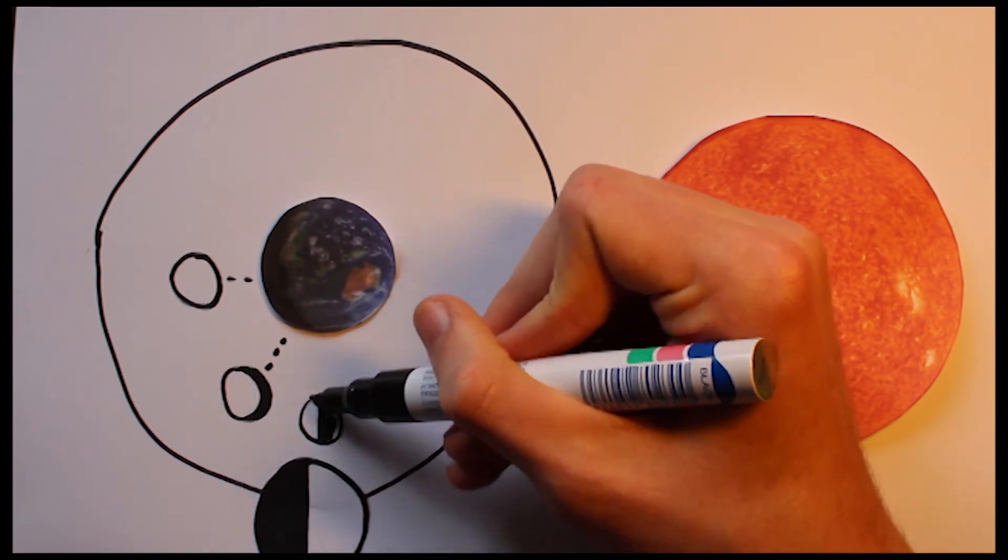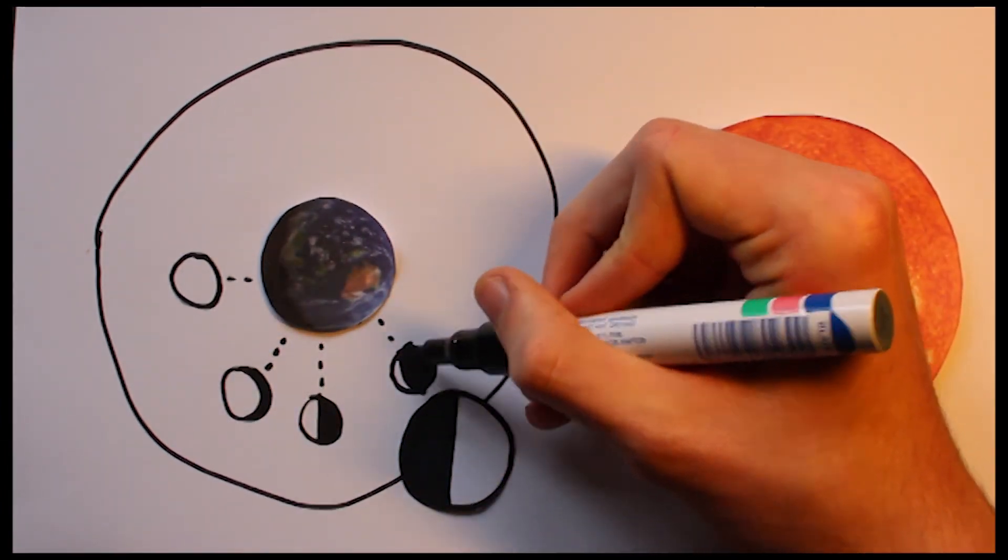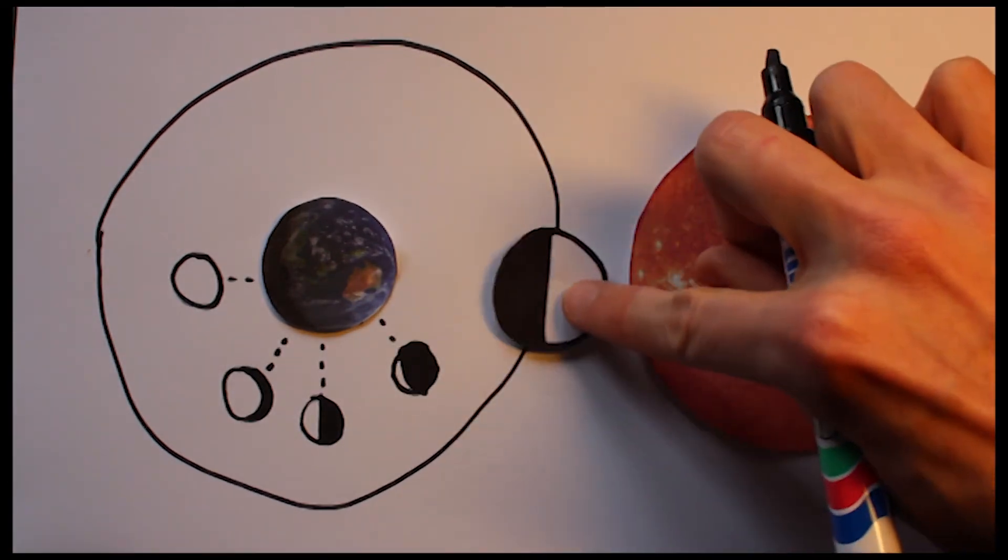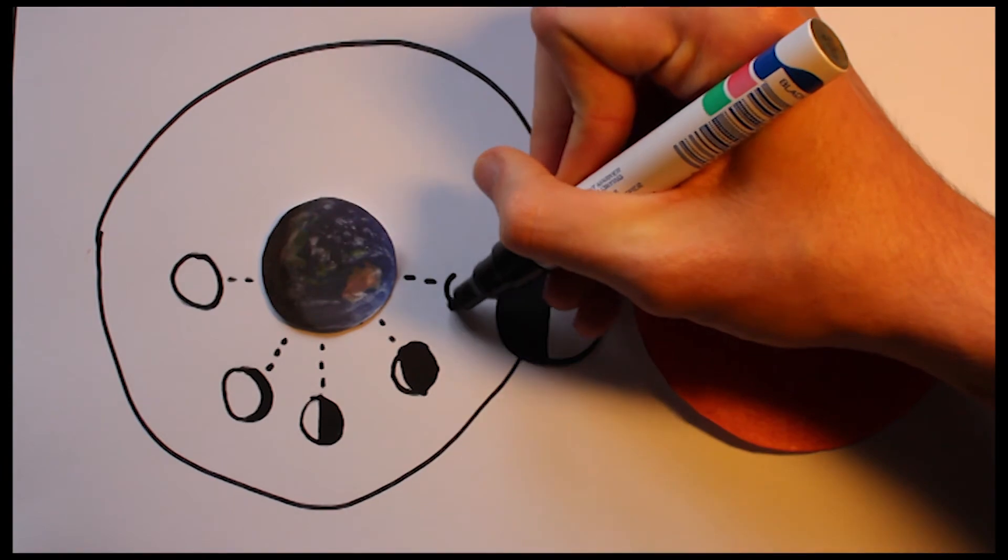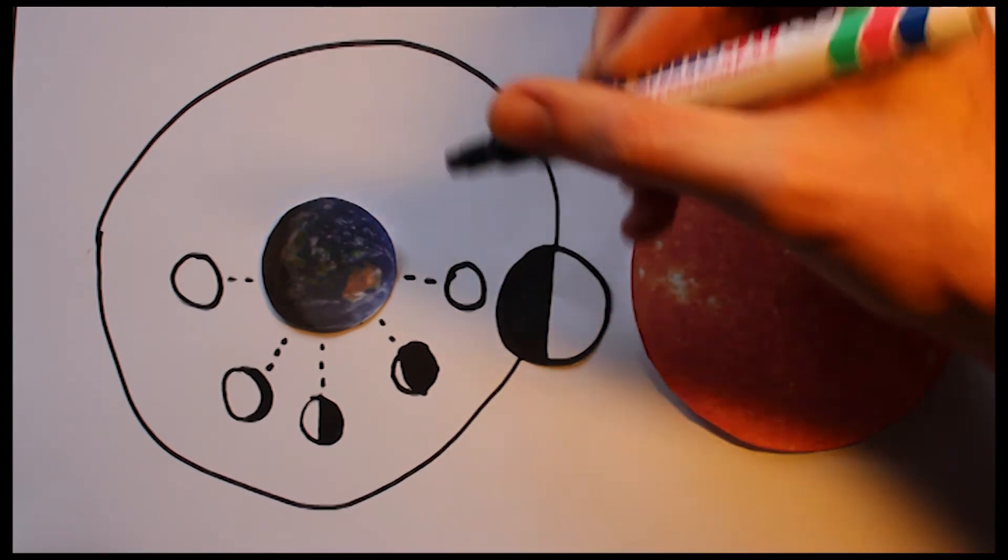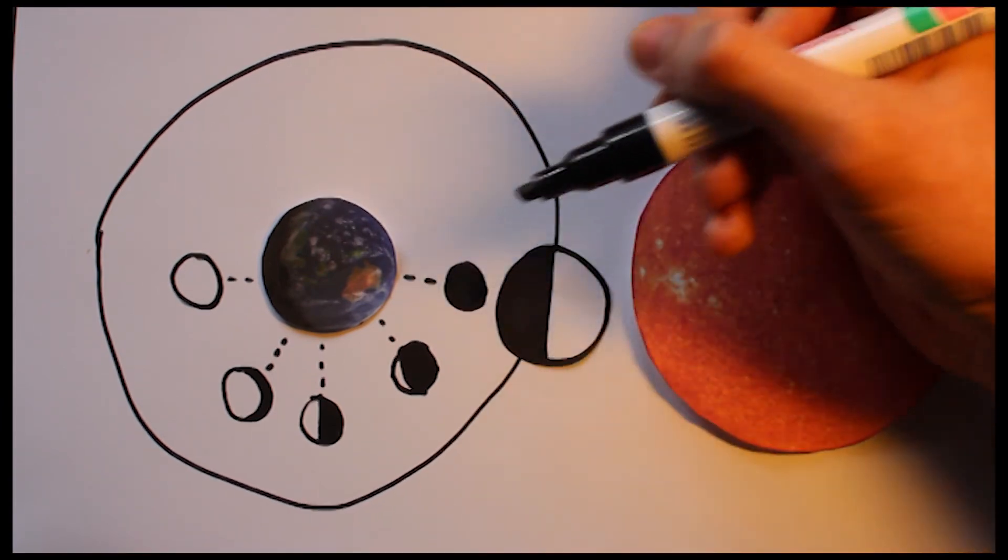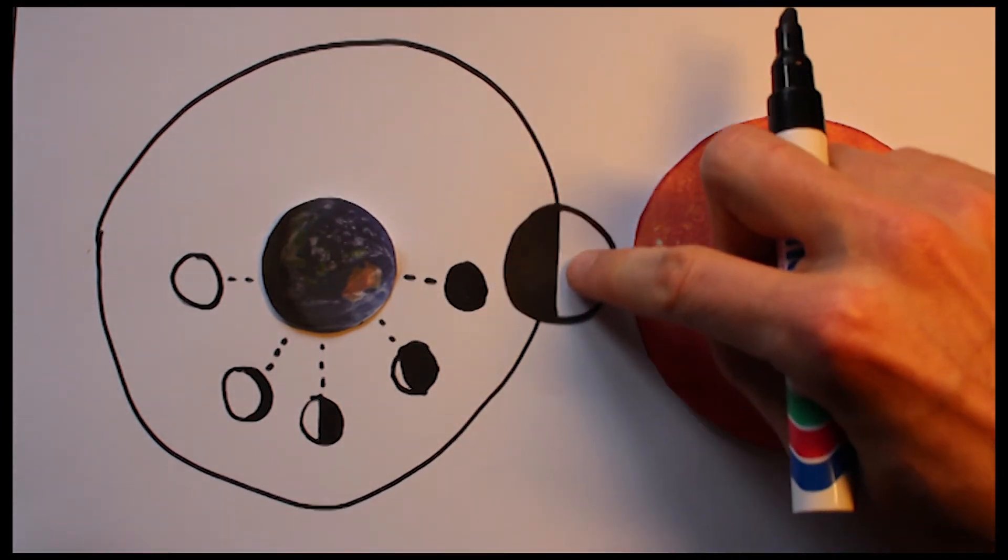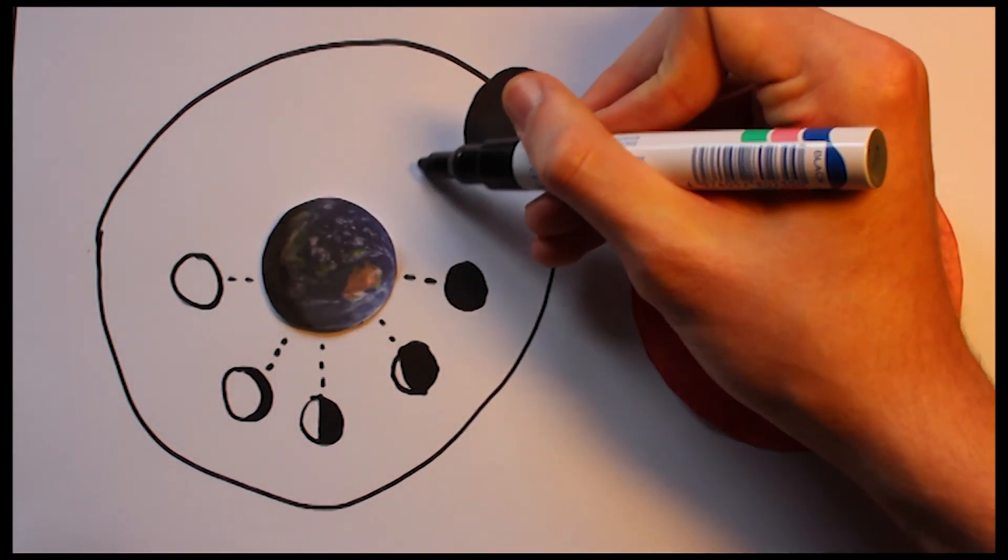And so the Moon continues to rotate and orbit around the Earth until it gets to a new Moon. Now here, the face we saw at full Moon is still facing the Earth, but we cannot see it as the Sun's light is shining upon the other side. It is for this very reason that there is no true dark side of the Moon. Both sides are completely illuminated at one stage.